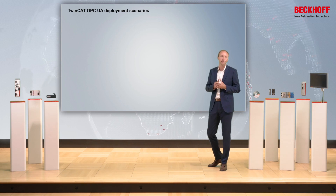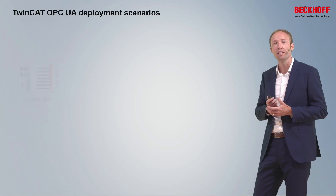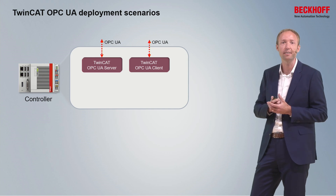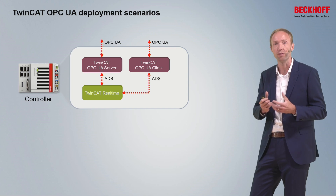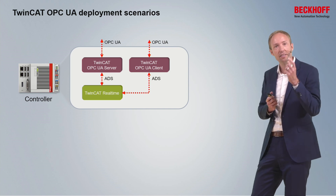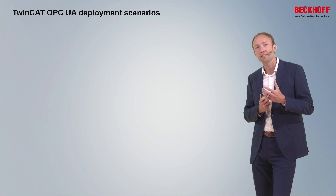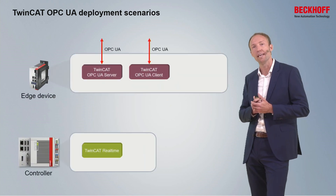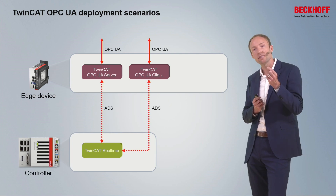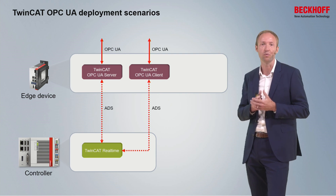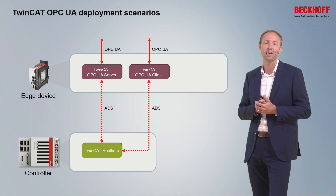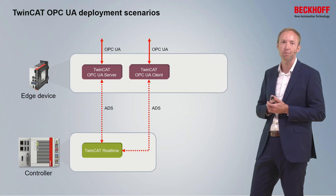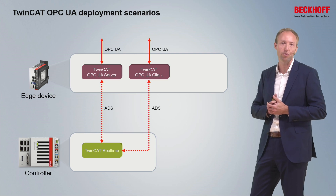In a typical deployment scenario, you install the client or server application directly on the controller — no separate hardware required. Access to the TwinCAT Realtime is done via the ADS protocol, which is capable of being routed through the TCP/IP network. In a second scenario, the TwinCAT OPC UA client and server application can be installed on an edge device, while the underlying controller executes the TwinCAT Realtime. This also enables retrofitting existing machines in a brownfield scenario.